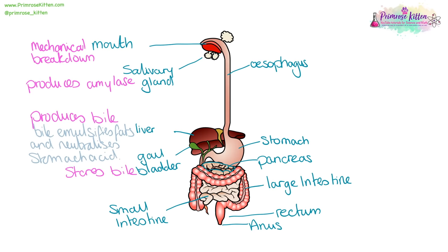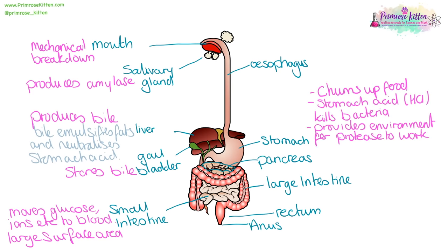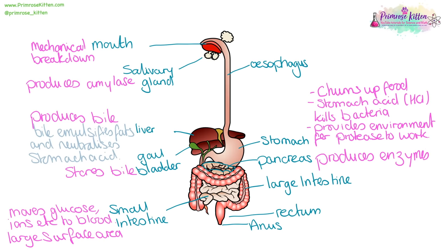The gallbladder stores bile. The small intestine moves glucose, ions, and other things into the blood, and has a very large surface area. The stomach churns up food. The stomach acid, hydrochloric acid, kills bacteria and provides an environment for proteases to work. Your pancreas produces enzymes. Your large intestine removes excess water. And your rectum and anus gets rid of waste food.